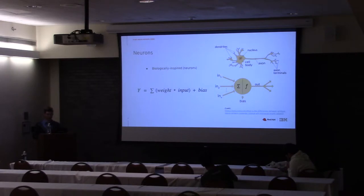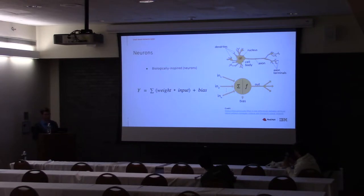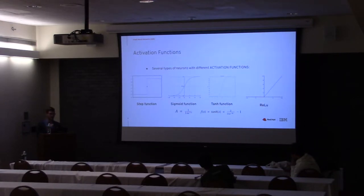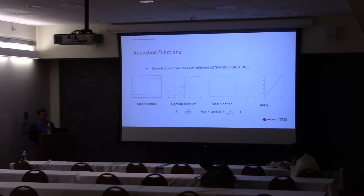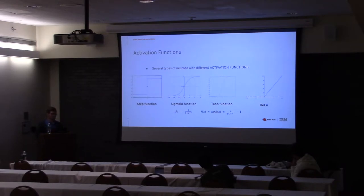Of course, this output takes many inputs and it needs to be bounded somehow, otherwise the output could be between minus infinity and plus infinity. This is why we use an activation function — it gives you a range in which the neuron can be fired or not. There are several types of activation functions, different depending on the architecture and for computational purposes and performance.